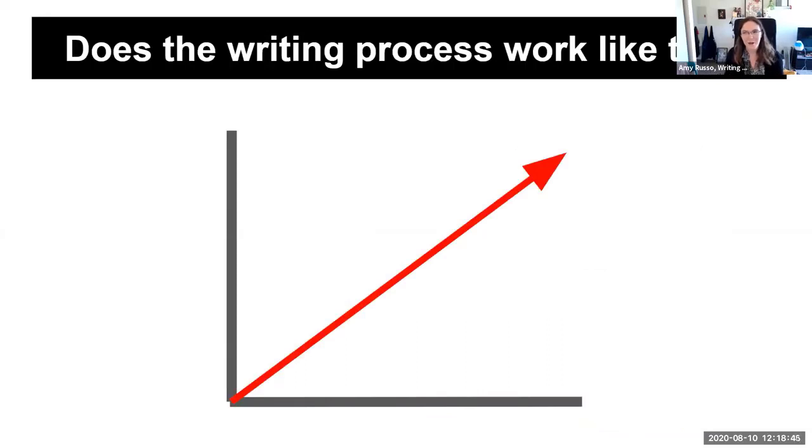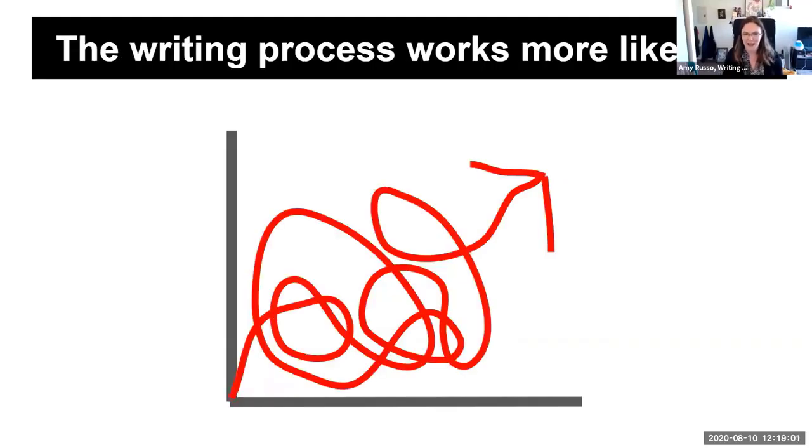So again, as Tom said, we all wish that writing was like this. We started at zero, we progressed through writing, the topics come out perfectly, there's nothing wrong with the grammar, we turn it in, get an A, and everyone understands what we want to say. Alas, writing looks something actually more like this. It's a twisting, winding process that often doubles back on itself.